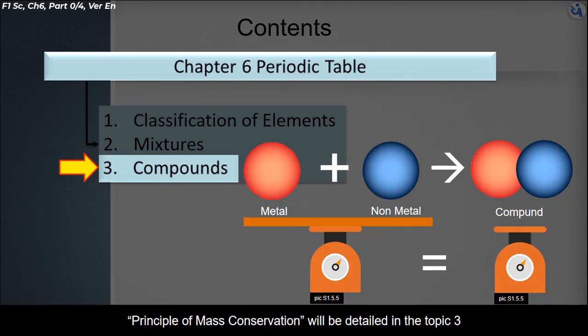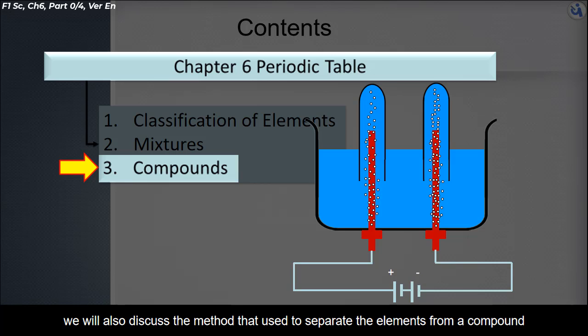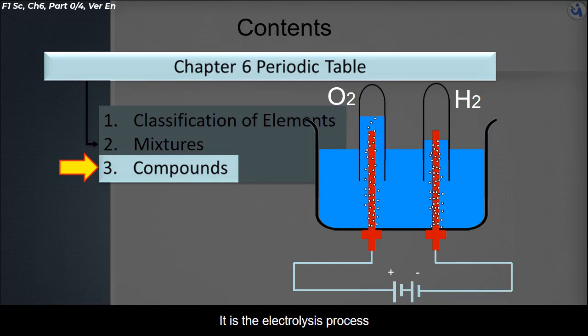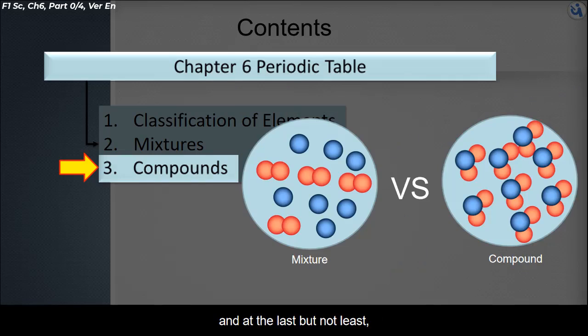The principle of mass conservation will be detailed in topic three. We will also discuss the method used to separate elements from a compound, which is the electrolysis process. We will discuss the differences between physical change and chemical change of matter. And lastly, we will do a comparison between mixtures and compounds to come out their differences.